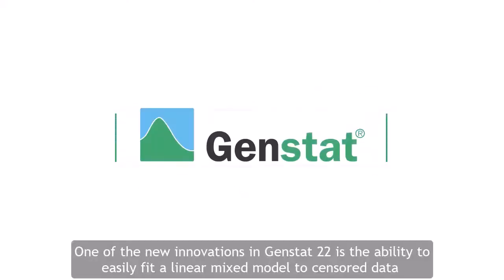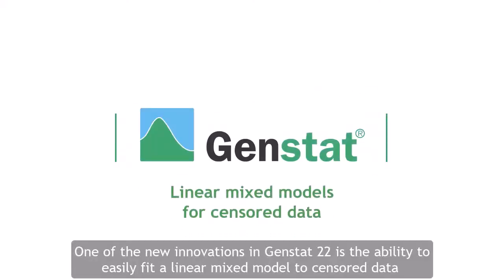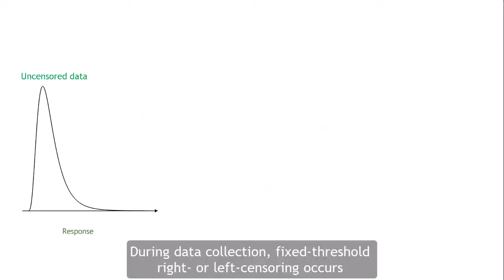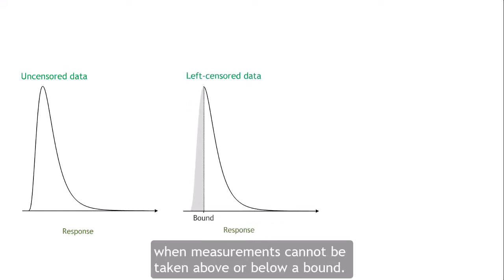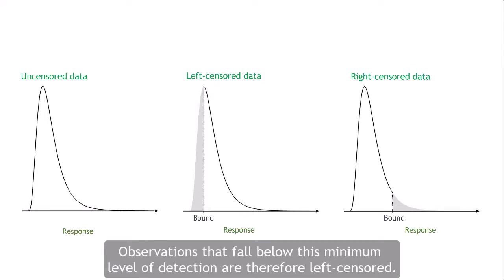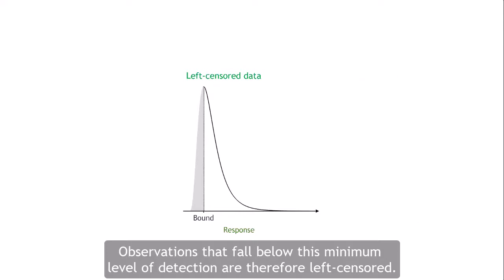One of the new innovations in GENSTAT 22 is the ability to easily fit a linear mixed model to censored data and obtain well-behaved and reliable estimates of the treatment means. During data collection, fixed threshold right or left censoring occurs when measurements cannot be taken above or below a bound. For example, this often occurs in chemical assays where the process cannot distinguish small amounts. Observations that fall below this minimum level of detection are therefore left censored.